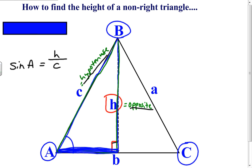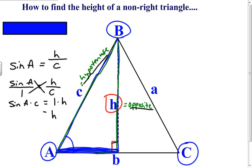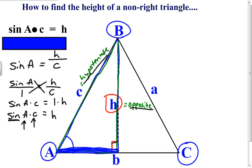If we set up a proportion — sine A over 1 equals h over c — we can cross-multiply to solve for h. So sine of A times c equals 1 times h. In other words, h equals the sine of angle A times c. To represent the height, we need to know the angle measurement and a side length, then take the sine of that angle and multiply it by the side length. So sine of angle A times c is a way to represent the height.